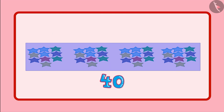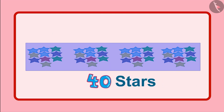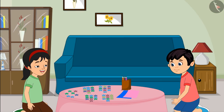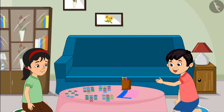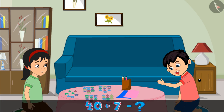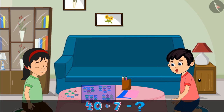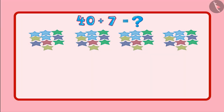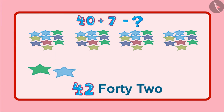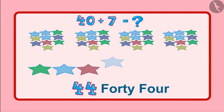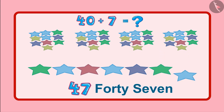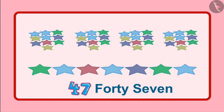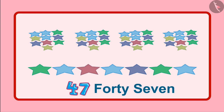So, the total number of stars are 40. Now how many stars are left, Chotu? There are 7 stars left. This means 40 stars and 7 stars. So, these will be 41, 42, 43, 44, 45, 46, 47. So, the total number of stars are 47.